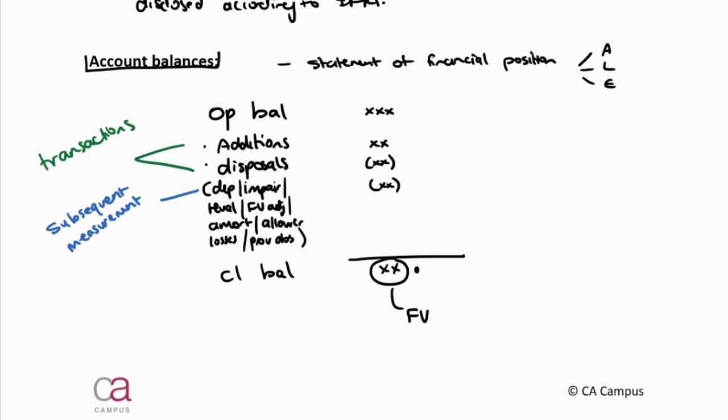When you need to audit the closing balance or an account balance, you're going to have to do some work on the opening balance. For the additions and disposals — because those are transactions — they will have to be audited using your class of transaction assertions. Remember, those are completeness, accuracy, occurrence, cut-off, and classification. All of those assertions would need to be tested for your additions and for your disposals.